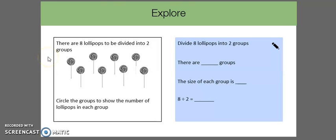In this problem, there are 8 lollipops to be divided into 2 groups. Circle the groups to show the number of lollipops in each group. Pause the video and see if you're able to answer these questions.